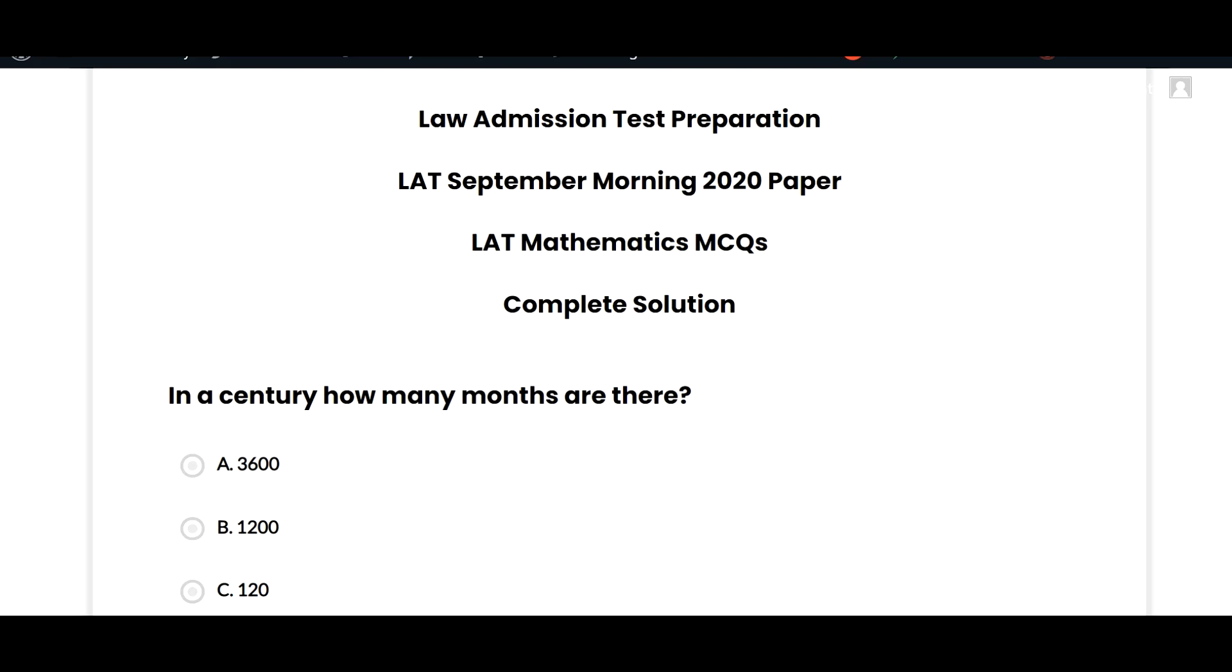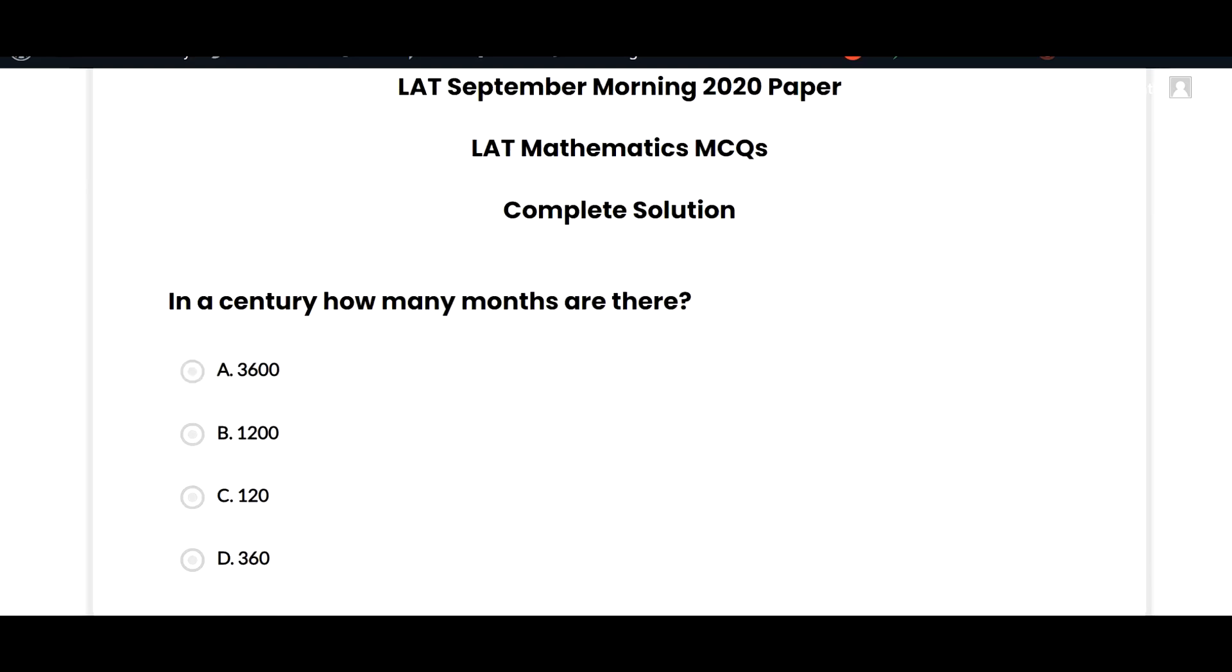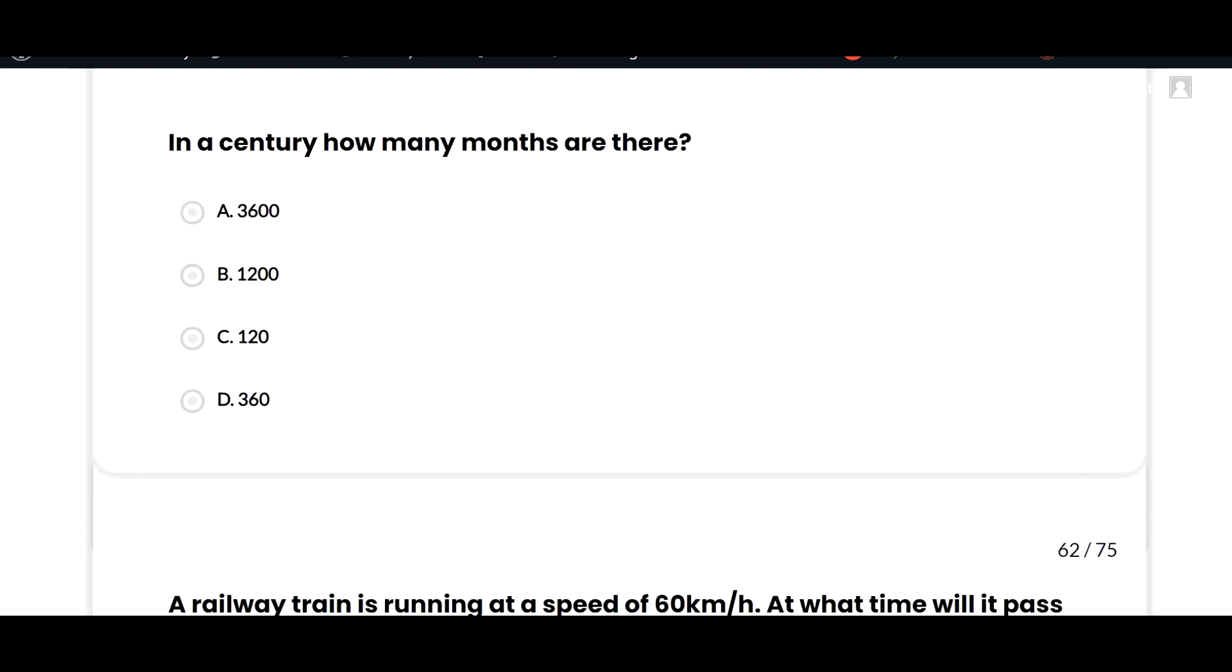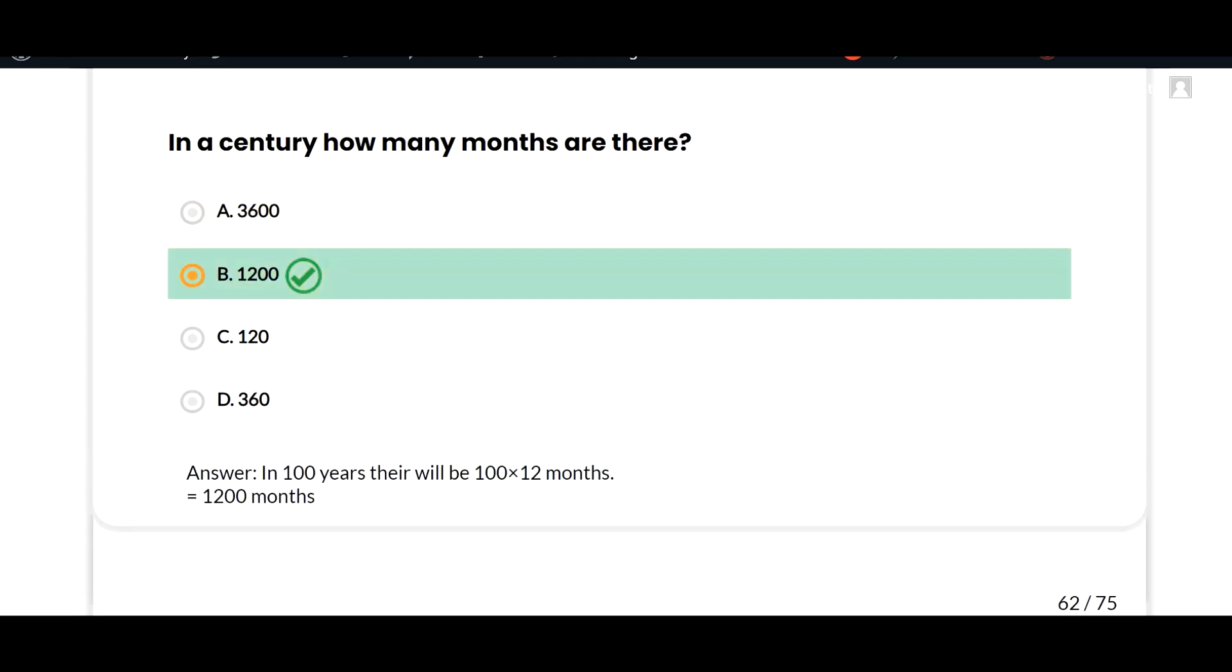Hey guys, today I am going to solve the past paper of Law Admission Test September Morning 2020, the mathematics section. So let's start. The first MCQ is: In a century, how many months are there? The answer is 1200, option B is correct, because in 100 years, 100 multiplied by 12 gives us 1200 months.